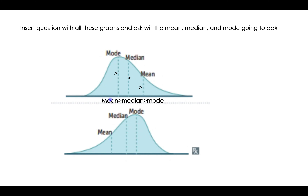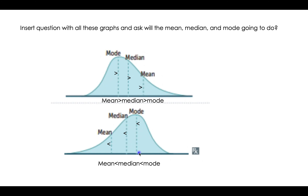If you can remember the order — mean, median, and mode in alphabetical order — and then put the sign pointing towards the little tail, you're going to know that the mean is greater than the median, which will be greater than the mode. Same with the other side: take mean, median, and mode in alphabetical order and put the sign pointing towards the tail. So in a left-skewed distribution, the mean will be less than the median, which will be less than the mode. This helped me a lot, because if you get one of these questions, you can answer it in less than 10 seconds, versus when I thought you actually had to calculate it.